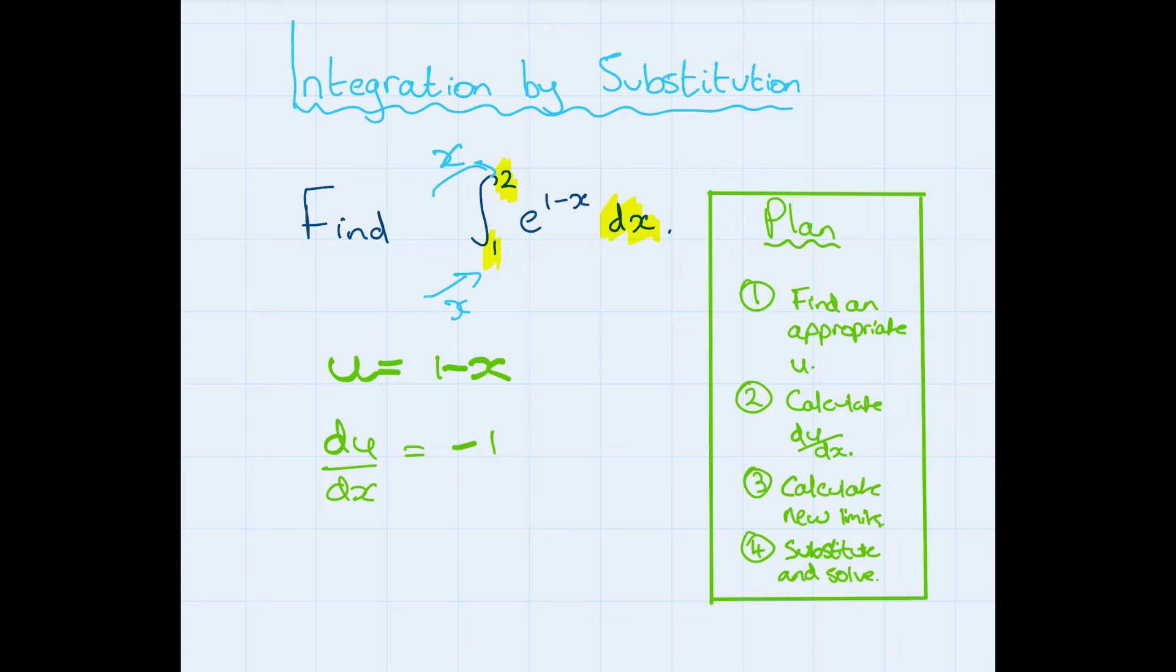And because we're going to be substituting, we need to change this dx into du. Okay, so this tells us then that dx, well if we multiply across, we're going to get minus du.